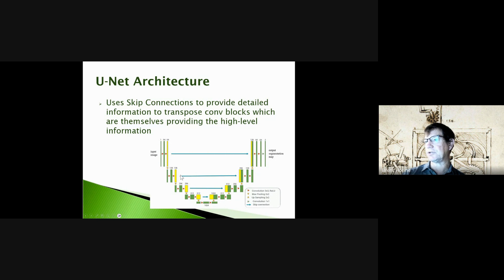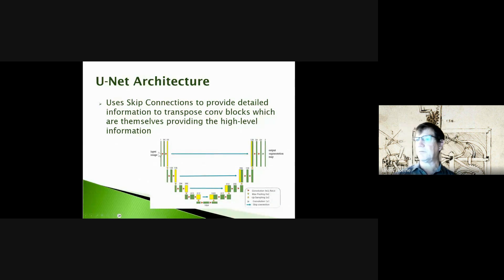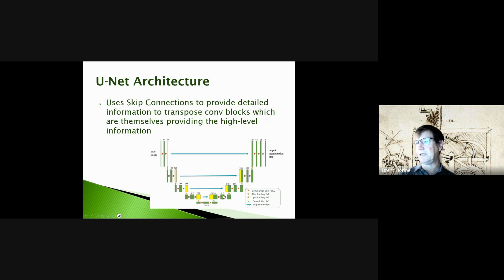We have these skip connections that basically short-circuit information flow. Starting at the top with a high-resolution image, we feed some of that high-resolution information across to the output, while also getting highly digested generalized information brought back up through transpose convolution. So we have coarse semantic segmentation information combined with high-resolution detail through the skip connections.